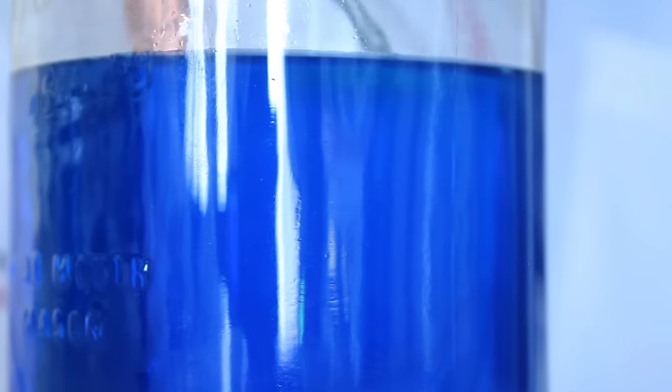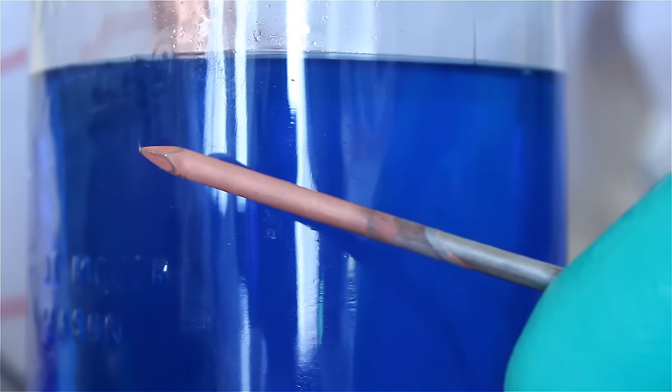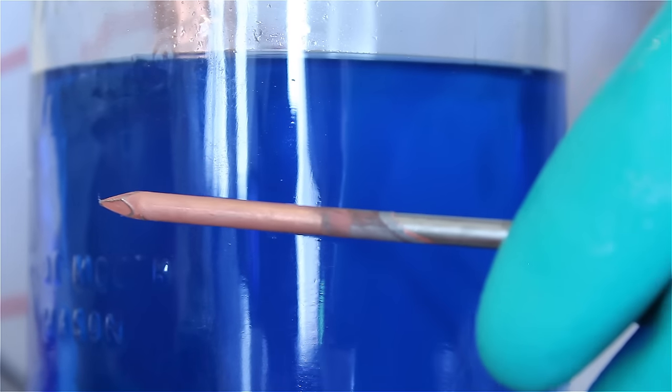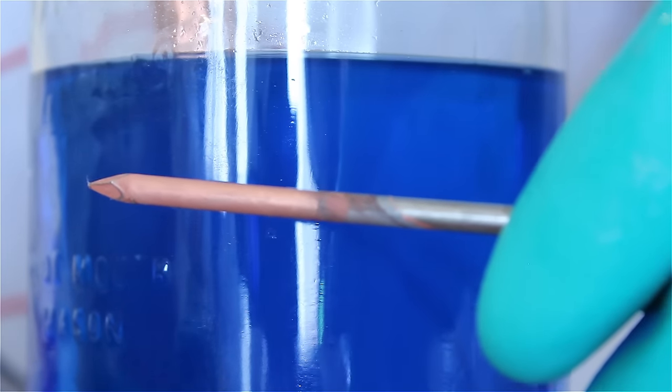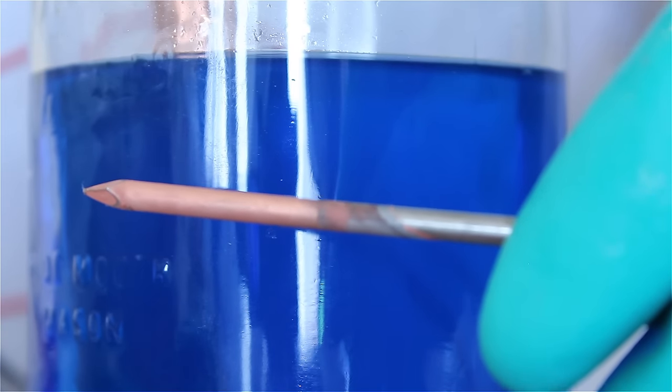Submerge the nail into the solution and move it around slowly so that it gets an even plating. Once the nail is done plating, remove it from the solution, let it drip, and dry it with paper towel. Once you're done, the nail should be coated in a thin layer of copper.